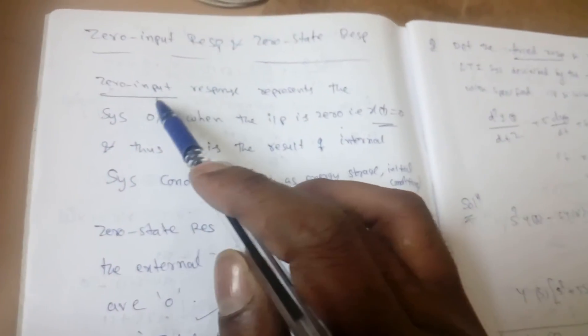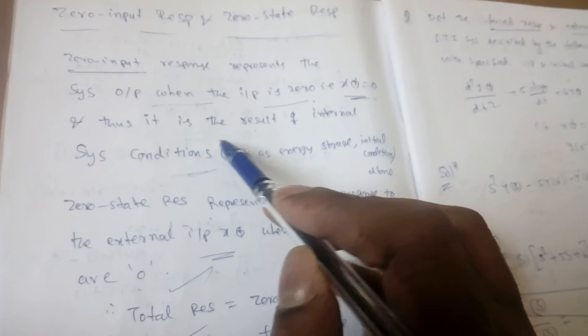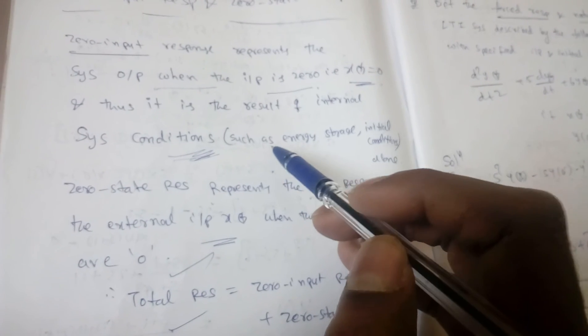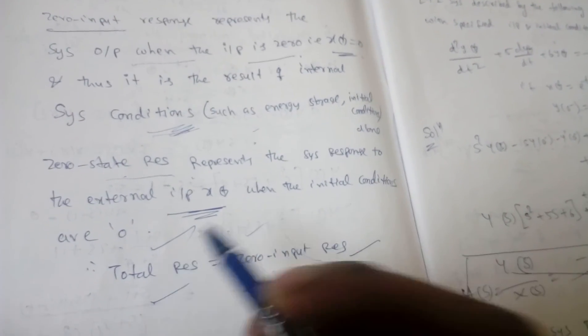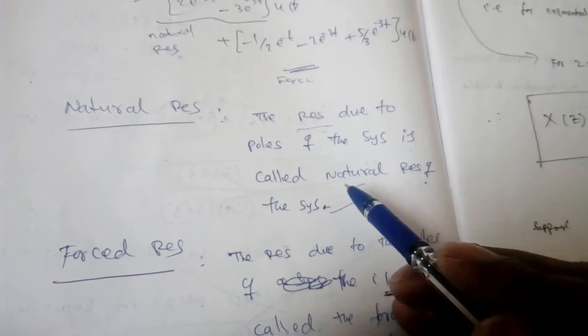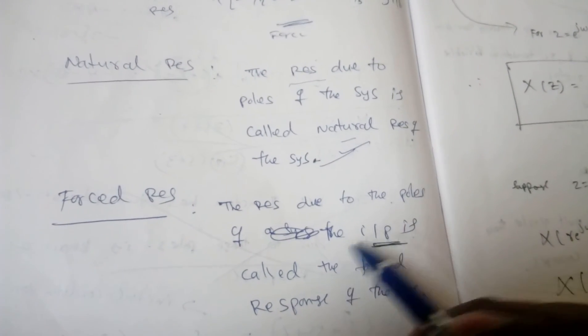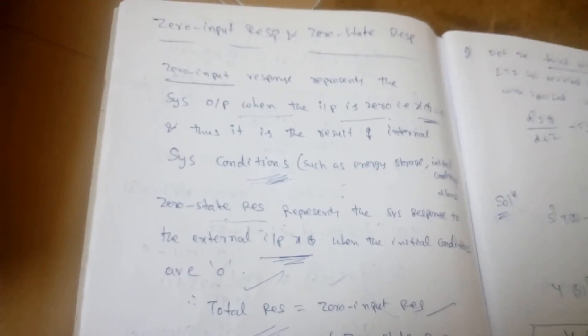Sometimes they will ask about zero-input response and zero-state response. Zero-input response is the system output when the input is zero, that is x(t) = 0 — it results from internal system conditions, like initial conditions. Zero-state response is the system response to external input x(t) when initial conditions are zero. The total response equals zero-input response plus zero-state response. Additionally, natural response is the response due to the poles of the system, and forced response is due to the poles of the input.